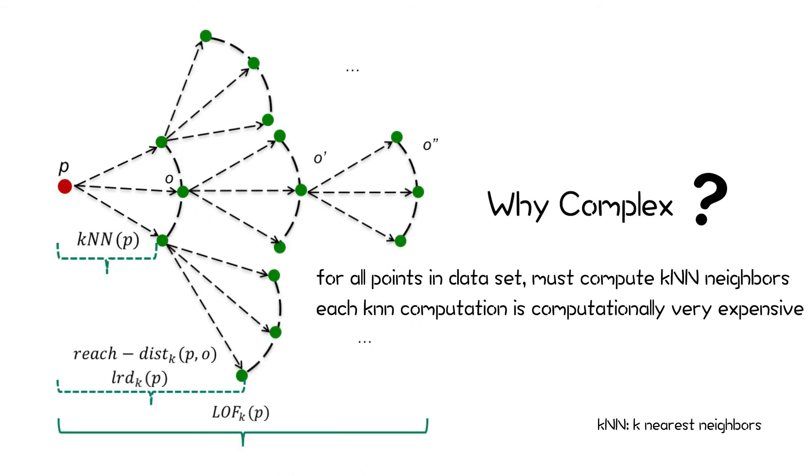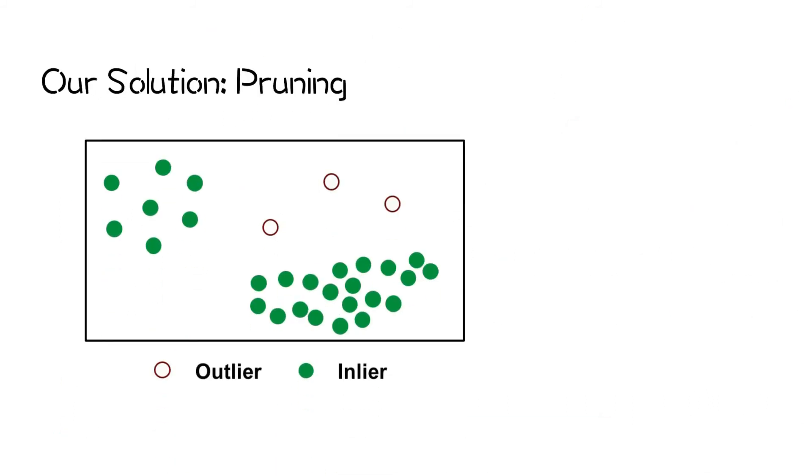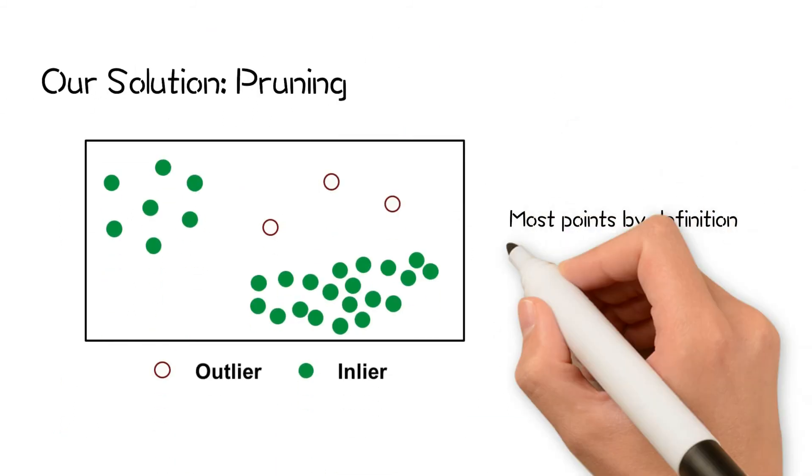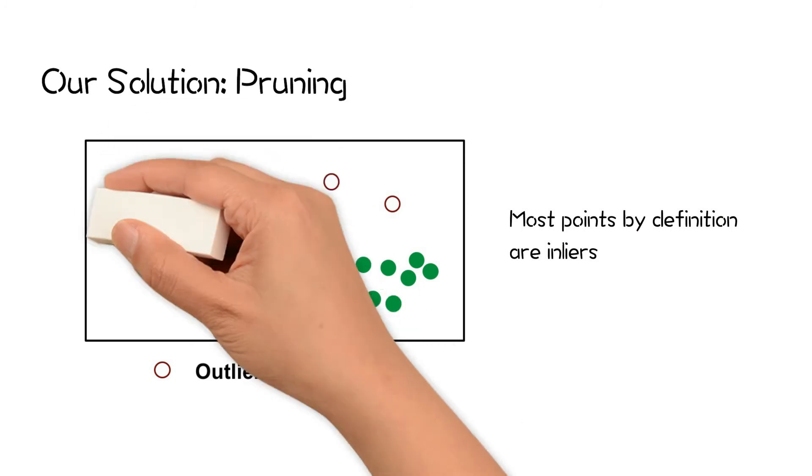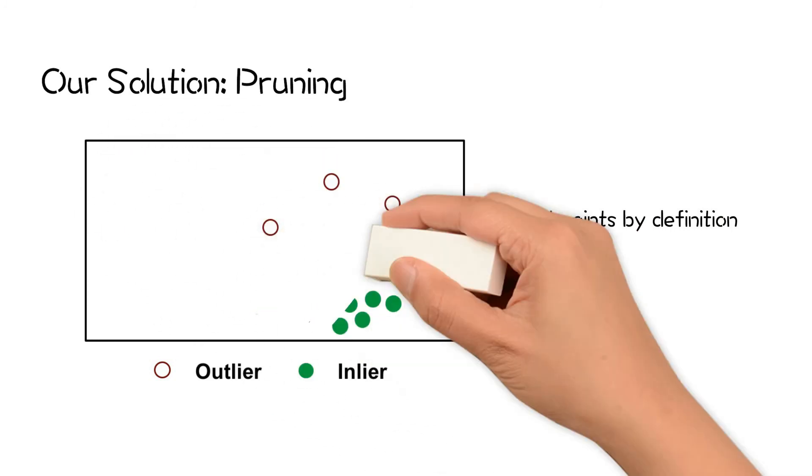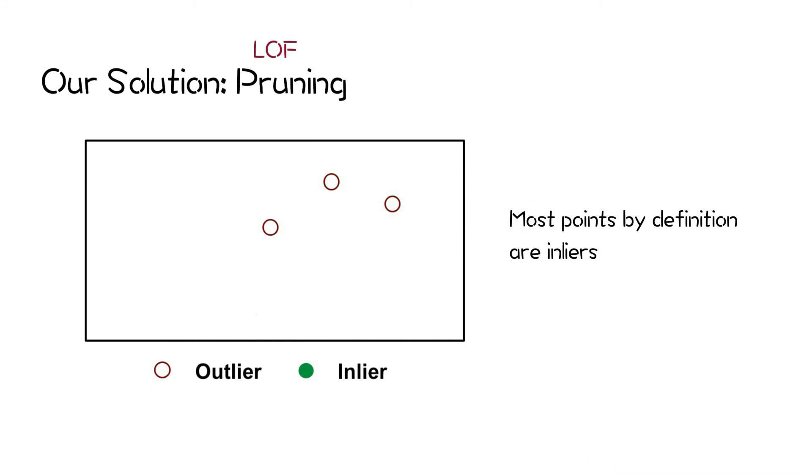Our solution features a pruning strategy. Since most points by definition are inliers, by our pruning strategy we can prune inliers in a timely fashion and only compute LOF for potential outliers.